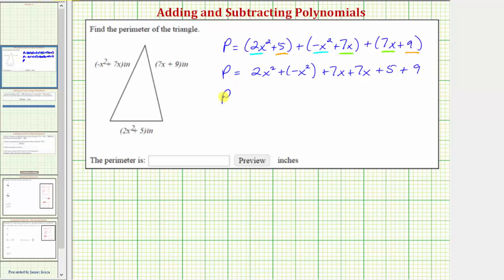So the perimeter P is equal to two x squared plus negative x squared, or two x squared plus negative one x squared is one x squared, or just x squared. And seven x plus seven x is 14 x, so we have plus 14 x.